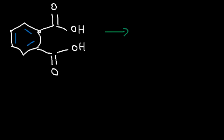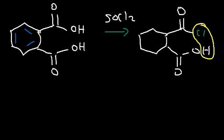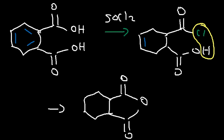You can also convert two carboxylic acids into an anhydride using SOCl₂. Once you add SOCl₂, one of the carboxylic acids will initially turn into an acid chloride — they won't react at the same time, since the chances of two SOCl₂ molecules being at the right place at the right time is slim. So one carboxylic acid turns into an acid chloride, and at that point the other one can react with it. You're going to lose HCl, and this is going to turn into the acid anhydride. This is another way to turn a molecule that has two carboxylic acids into a cyclic anhydride.